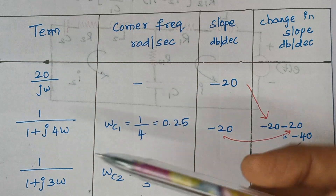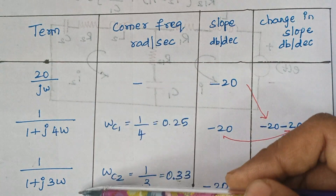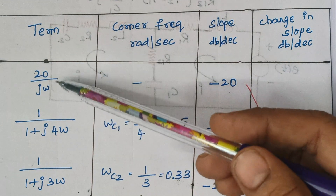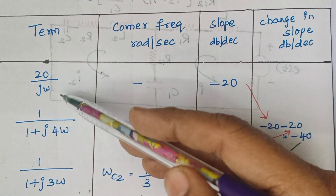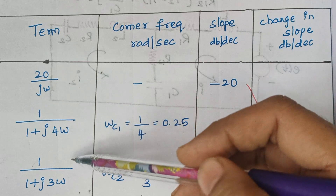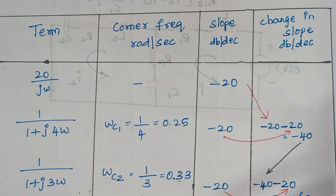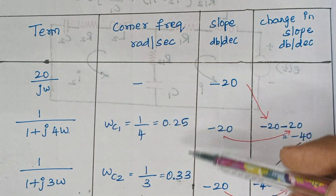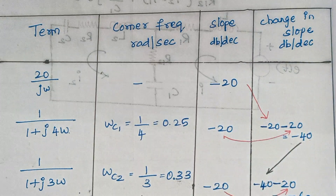The first thing we should do is arrange the terms. As we all know, the first part should be occupied by a constant with an individual omega term. Here it is 20 by j-omega. The remaining terms should be arranged in ascending order of corner frequencies. Here the first value is 0.25 and the next value is 0.33.